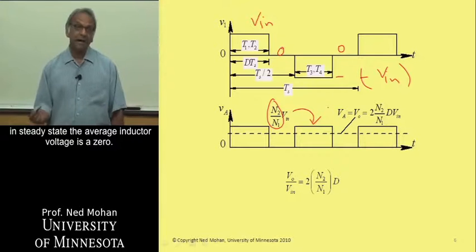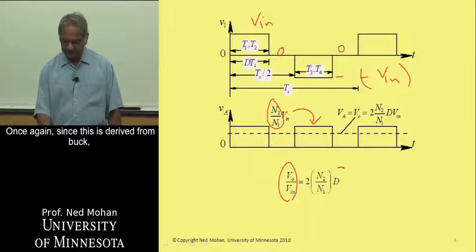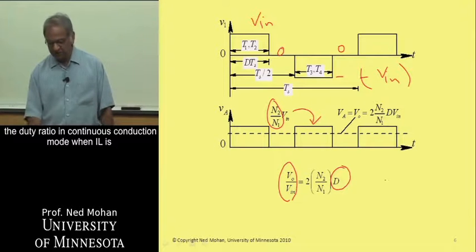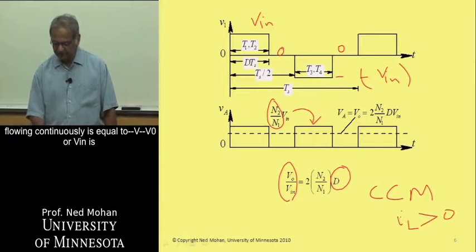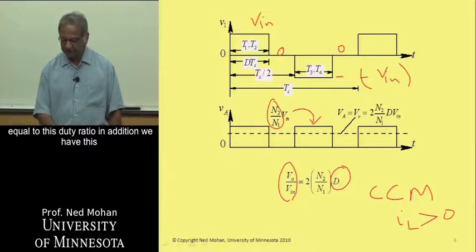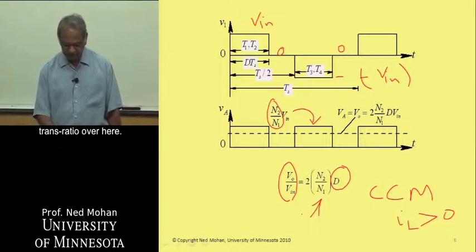and the average of VA is equal to the output voltage because in steady state, the average inductor voltage is 0. So from here, we get the turns ratio to look like this. Once again, since it's derived from buck, the duty ratio in continuous conduction mode when IL is flowing continuously is equal to V0 over VN is equal to this duty ratio.